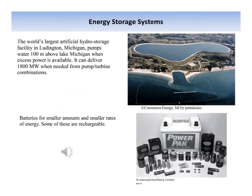A flywheel stores energy and momentum in its angular motion. It is used to dampen out fluctuations arising from single cylinder engines that otherwise would give an uneven rotational speed. The storage is for only a very short time. A modern flywheel is used to dampen fluctuations in intermittent power supplies like a wind turbine, and can store more energy than earlier designs. A bank of several flywheels can provide substantial power for 5 to 10 minutes.